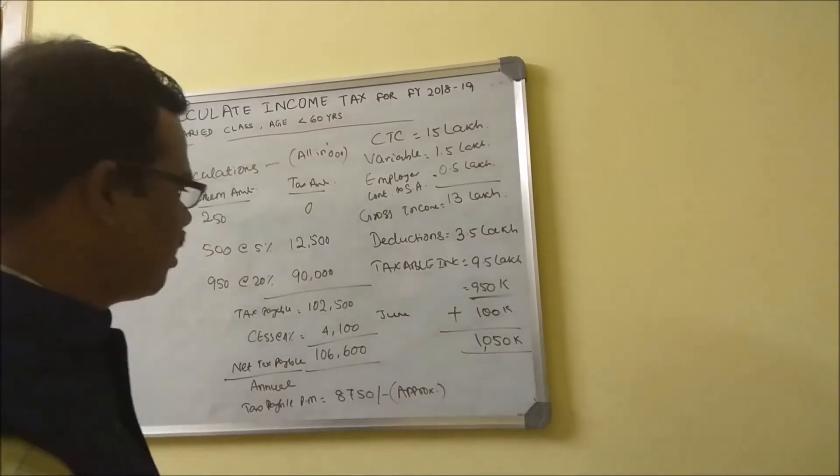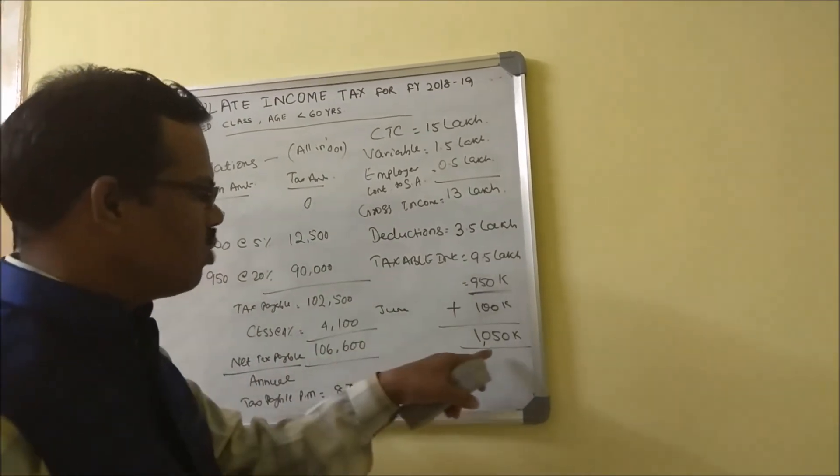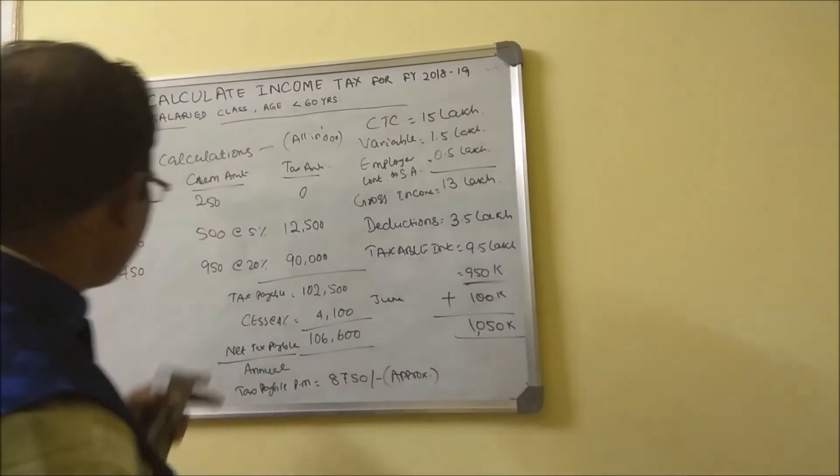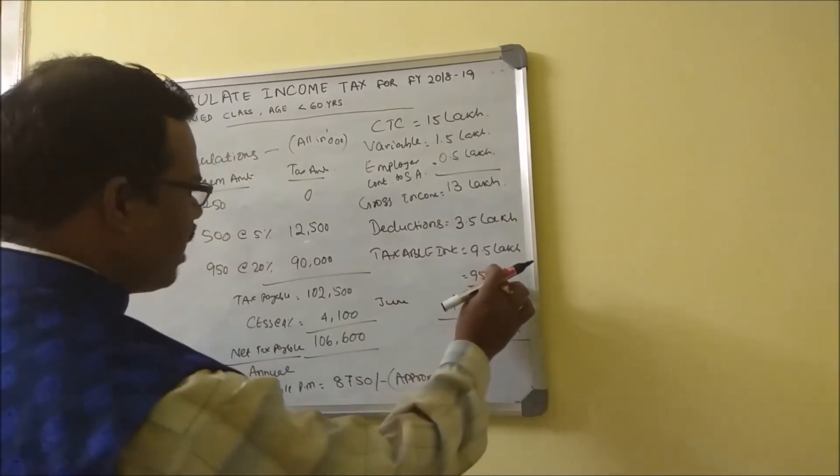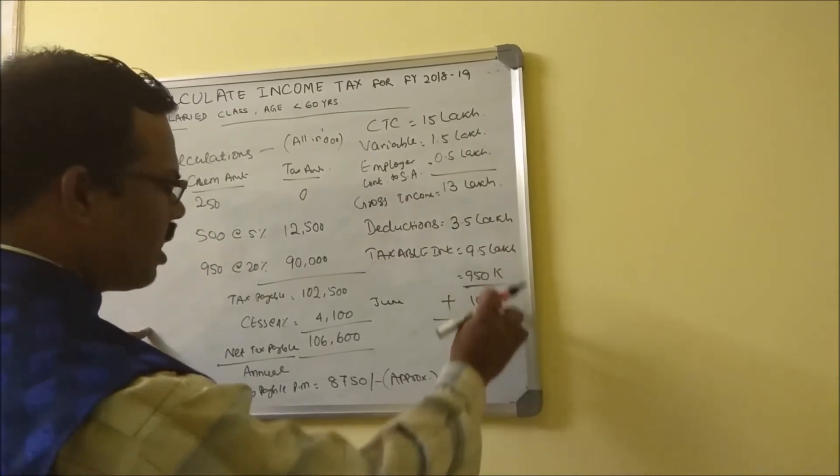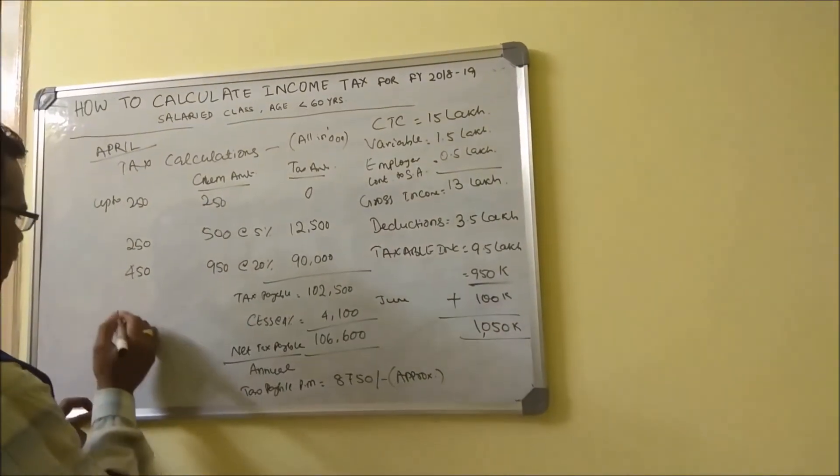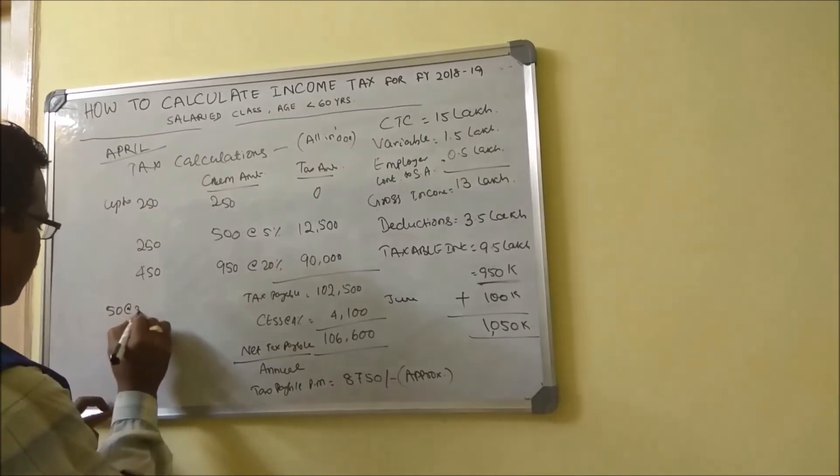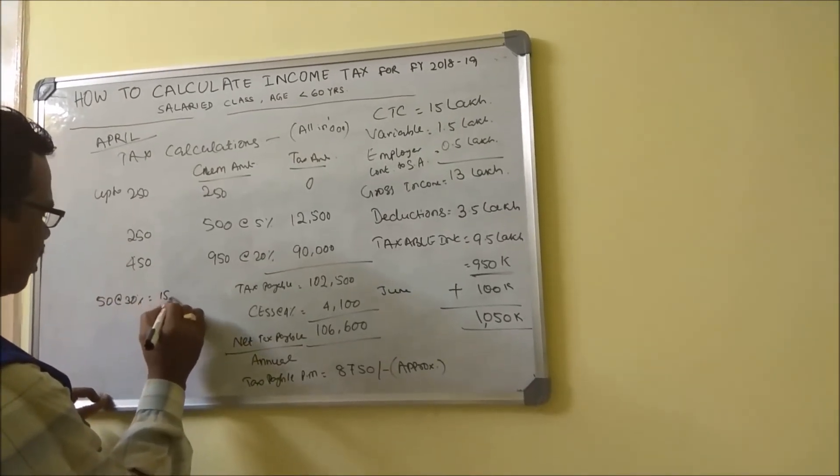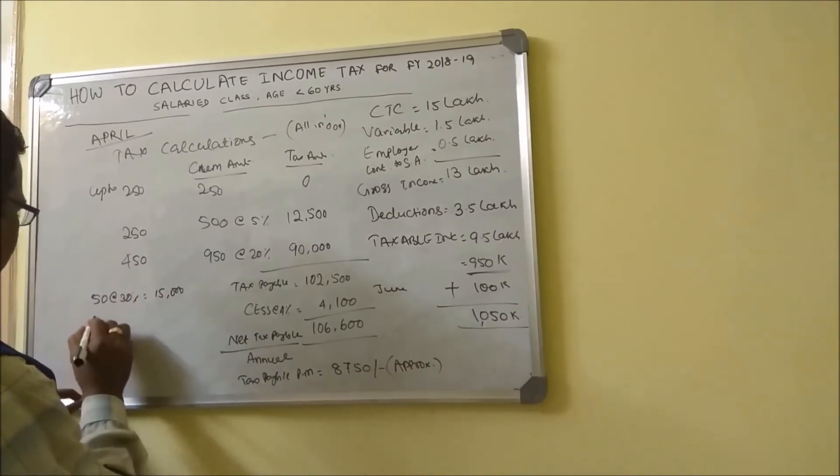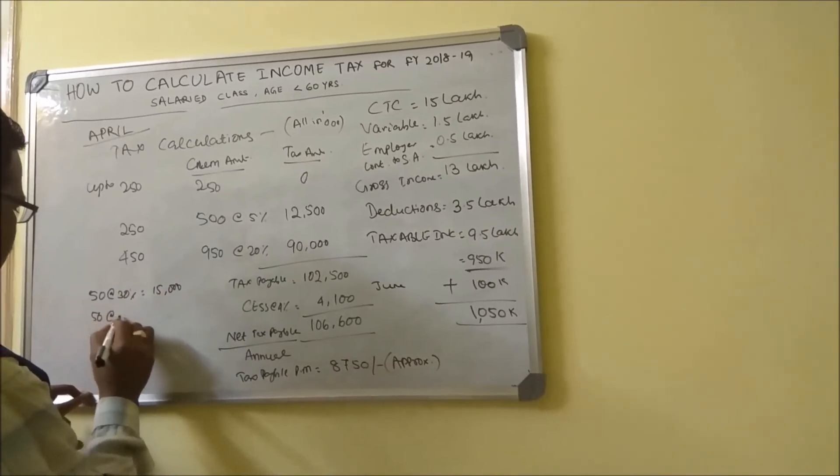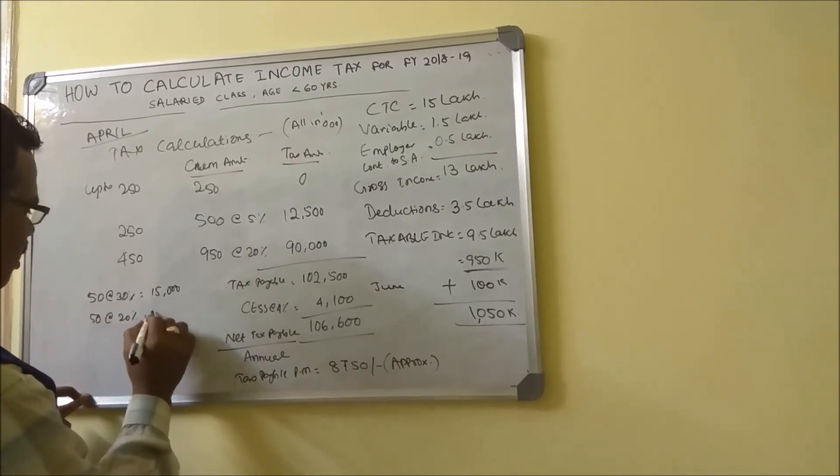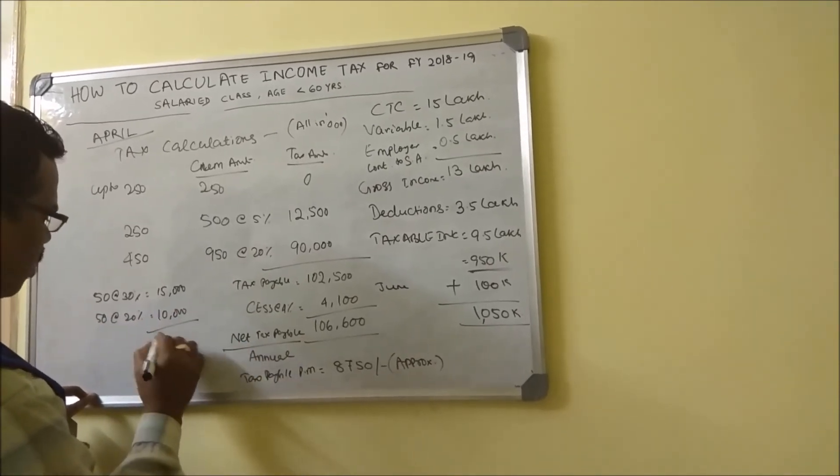As per our previous tiered structure, you have entered into a 30 percent tax bracket. How will it get calculated? From 950 to 10 lakh it will get calculated at the rate of 30 percent, that means 50,000 will come at 30 percent, so that comes to 15,000. And 50,000 at 20 percent comes to 10,000.